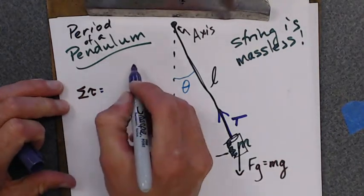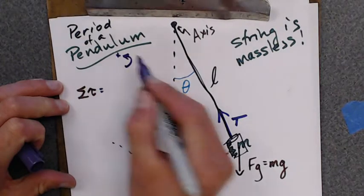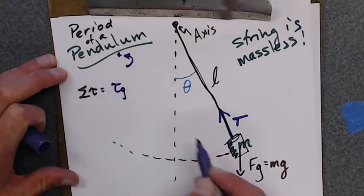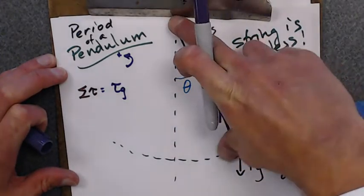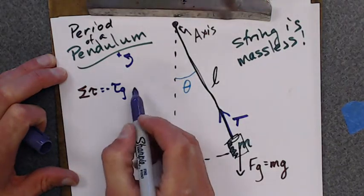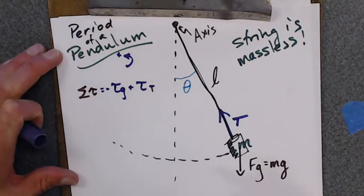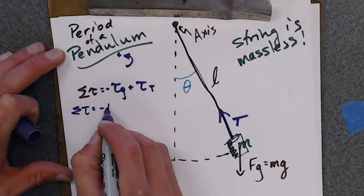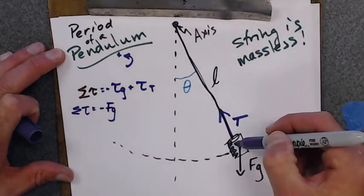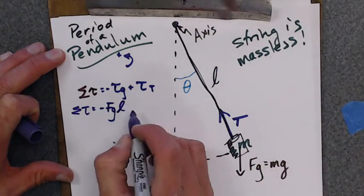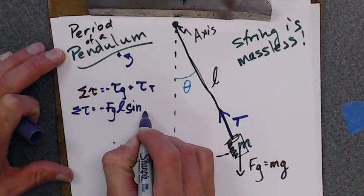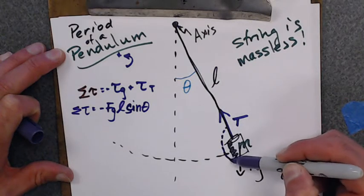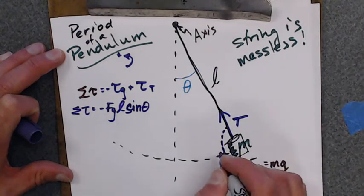The sum of the torques. So this way is positive. So I have the torque due to gravity - gravity is causing a clockwise rotation, so it's negative. And then I have the torque due to the tension. So the sum of the torques is negative the force of gravity times it's happening at length L times the sine of the angle between it, which in this case is that angle. I'm going to call that phi.